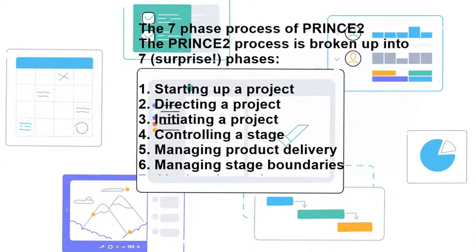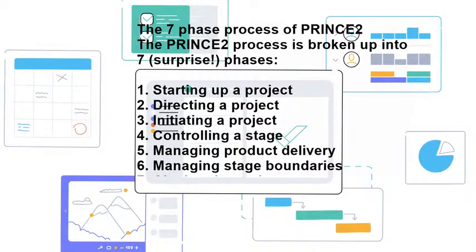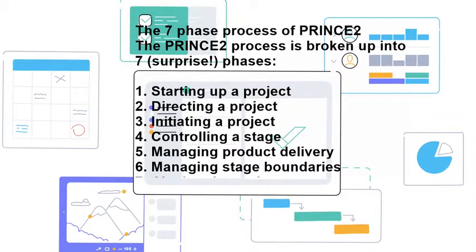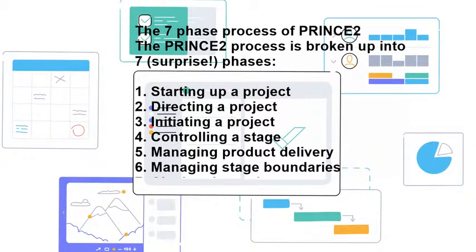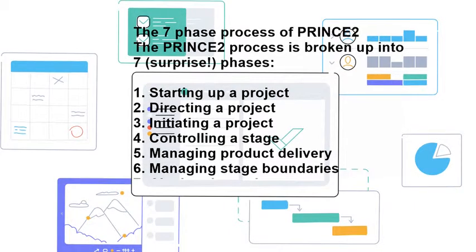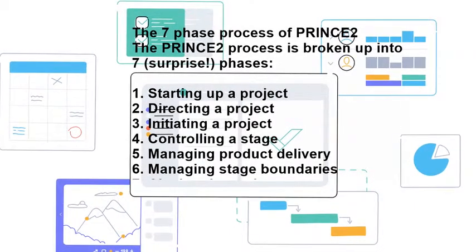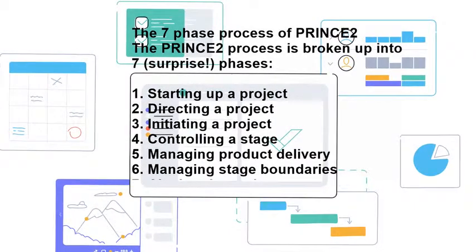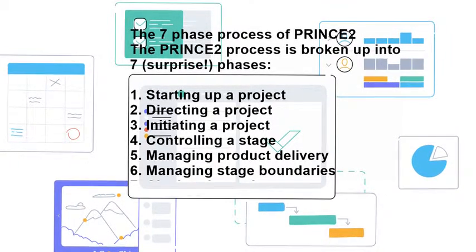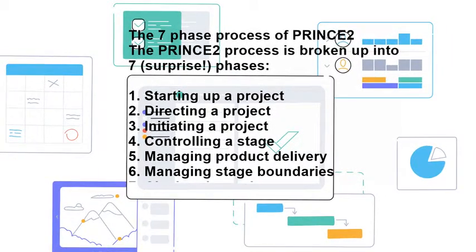The third phase is Initiating a Project. The project manager creates the project initiation documentation, including a comprehensive project plan and baselines for six performance targets: time, cost, quality, scope, risk, and benefits. Initiation documents are sent to the project board for approval.